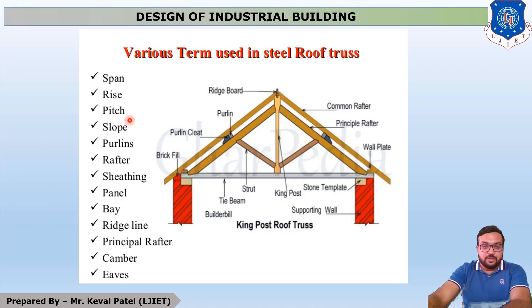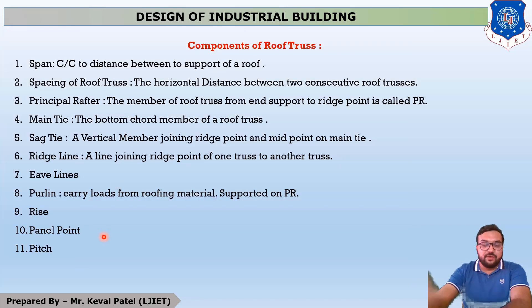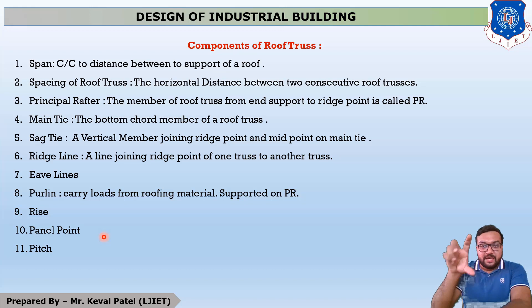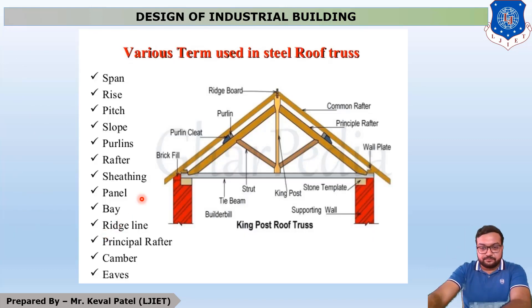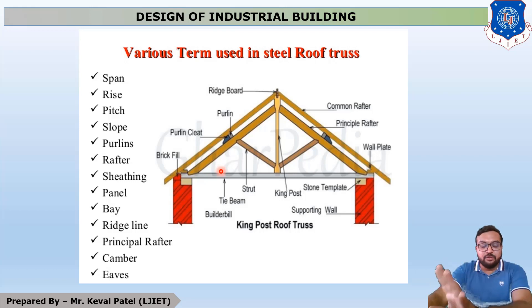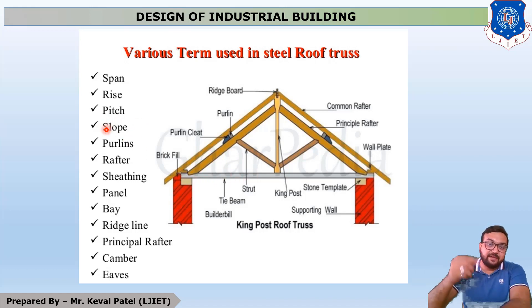Next is Pitch. Generally, Pitch is the ratio of Rise divided by Span, i.e., Pitch = R/L (Rise upon Span). Next is Slope. Whenever you find out the Slope, an angle alpha is considered, where tan(alpha) equals Rise divided by Span by 2. We then get the answer for Slope, which is the angle theta or alpha.